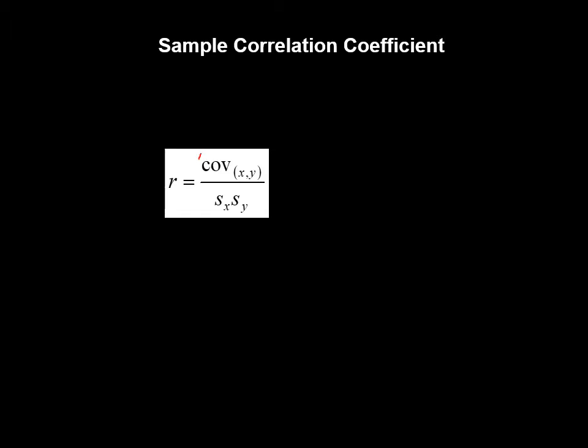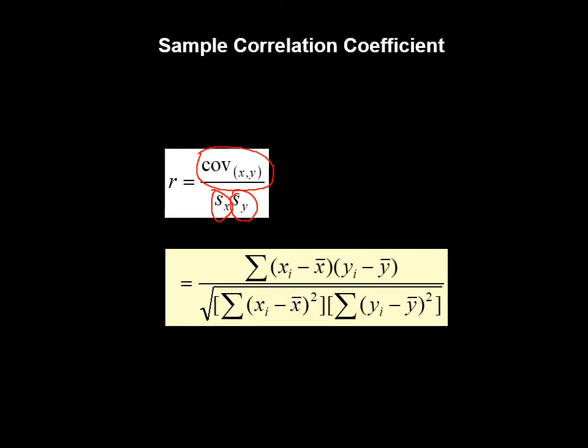The correlation coefficient formula is covariance divided by the product of the standard deviations of X and Y. The symbol for the standard deviation of X and the standard deviation of Y appear in the denominator. The n-minus-one terms cancel out between the numerator and denominator, giving us the simplified computational formula.